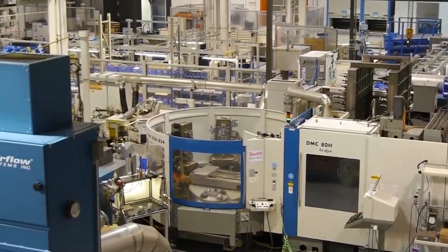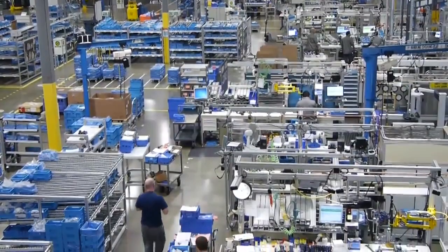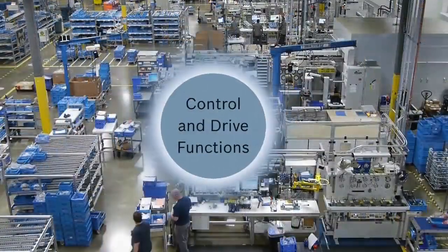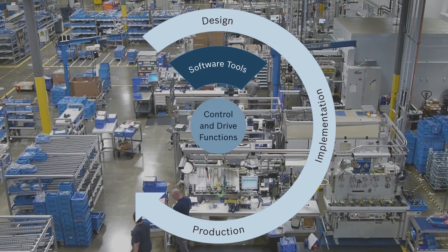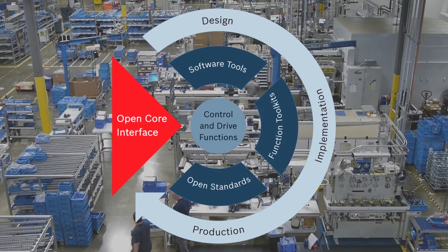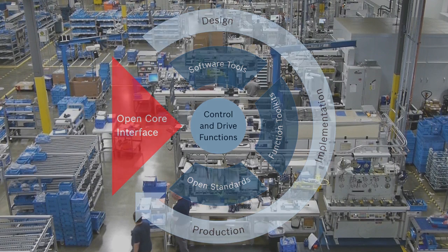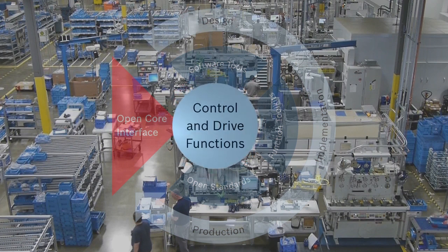The first thing we're going to talk about is this OpenCore engineering diagram. You'll see this diagram on a lot of our marketing materials and on our website. What this diagram represents is a description of OpenCore engineering as a whole. If we look at the core of it — the core of our business and the core of our products — we're talking about our motion control and our drive functions and products.